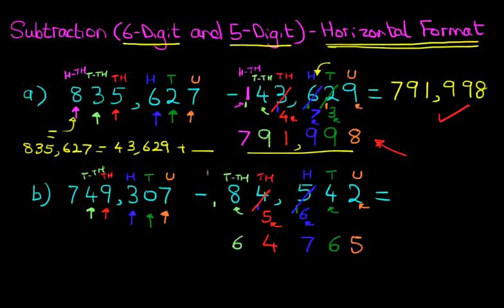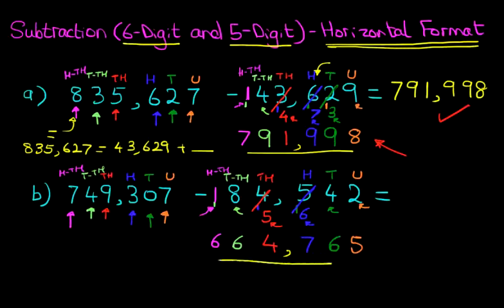We're onto now the last one — the 100-thousands. We've got 1 hundred-thousand plus the one we carried over. Our target is to get to 7. So what number added to the 1 is going to give us 7? The answer is 6. And that is our answer. Let's write it down properly: we've got 664,765.